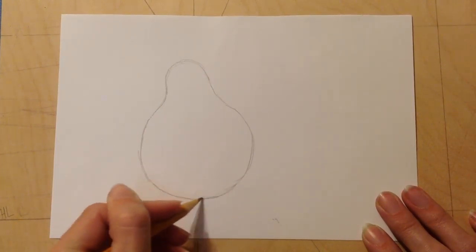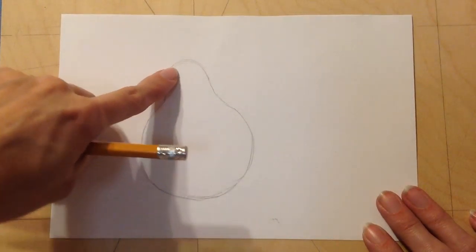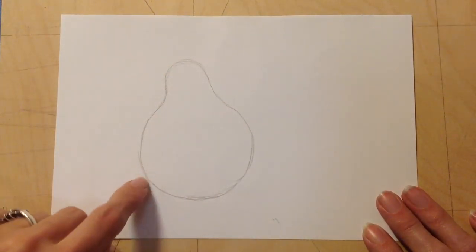Your pear shape doesn't have to look exactly like this one, because pears have different kinds of shapes. Some are thinner. Some are wider. Some have more of a bump at the top or less of a bump at the top.